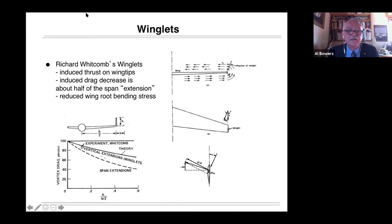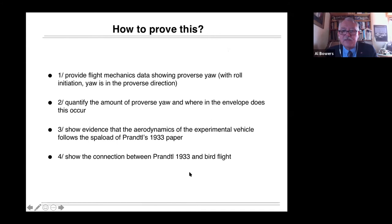How would we prove this? We need flight mechanics to show this proverse yaw instead of adverse yaw. How would you quantify the amount of proverse yaw and where in the envelope would that occur? And then could you prove that you were actually getting the aerodynamics that correlate with Prandtl's 1933 paper? And then we wanted to show the connection between Prandtl 1933 and bird flight.